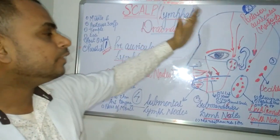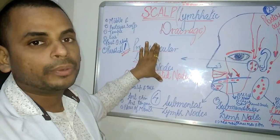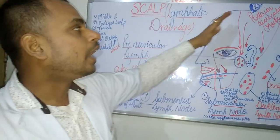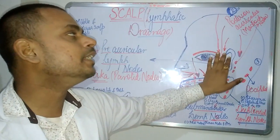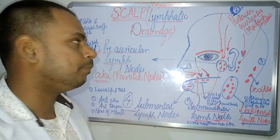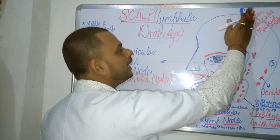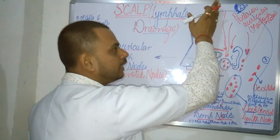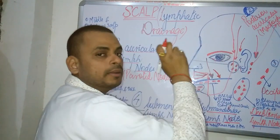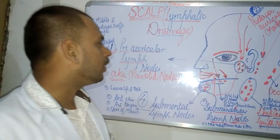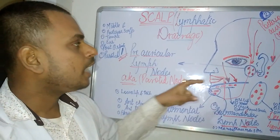The pre-auricular lymph nodes are going to drain the anterior part of the scalp. This entire anterior region of the scalp drains into the pre-auricular lymph nodes.